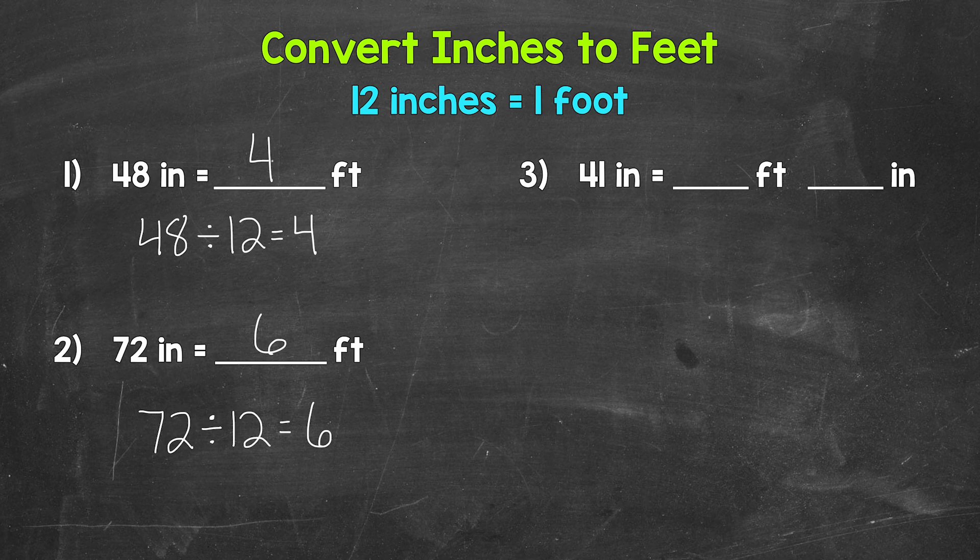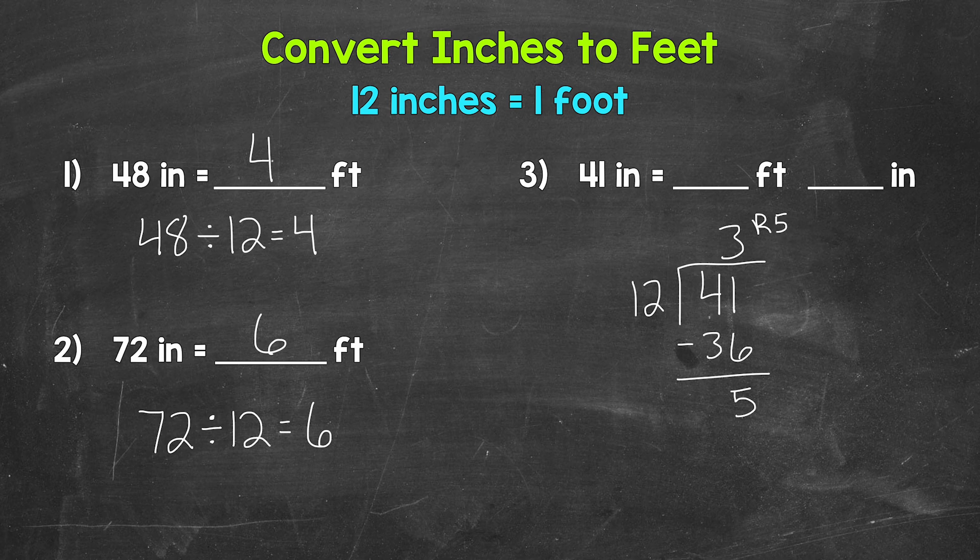So let's set this up as 41 divided by 12 since we are going to have a remainder here. So taking a look at 41 divided by 12, how many groups of 12 in 41? Well, 3. That's 3 feet there. So we have 3 feet, but that doesn't hit 41 exactly. We have a remainder. 3 times 12 gives us 36. And then 41 minus 36 gives us 5. So we have 3 remainder 5. That remainder of 5 represents 5 extra inches. So 41 inches equals 3 feet, 5 inches.